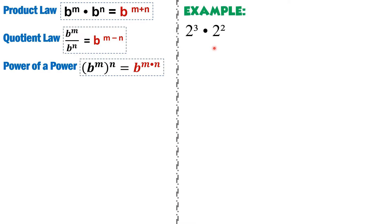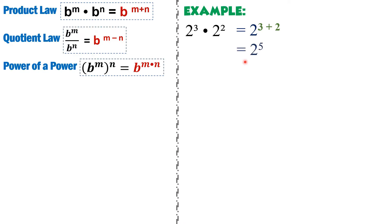For example, we have 2 cubed times 2 squared. As you can see, they have the same base — both are 2. So what you have to do is keep the base, then add their exponents. It will be 3 plus 2, which gives us 5. Therefore, the exponent of 2 will become 5.